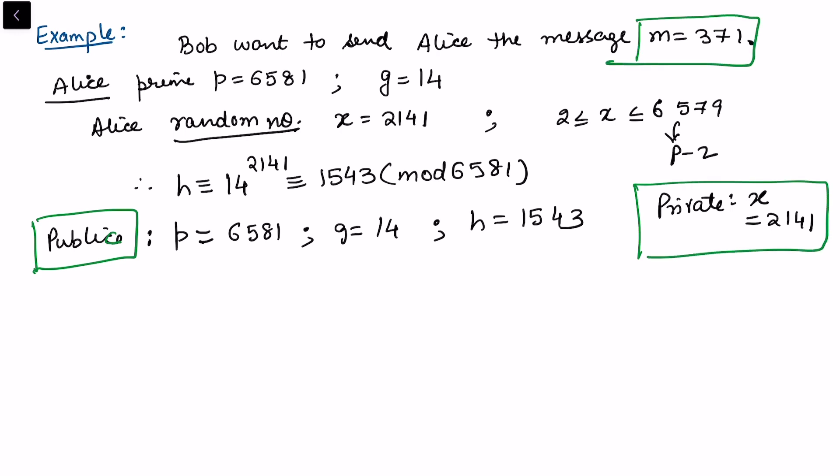Now Bob wanted to communicate this message, so Bob also chooses a random number y. And again, y has the same choice, 6391. We need to choose y also in the same format between 2 and p minus 2 because p is already available.